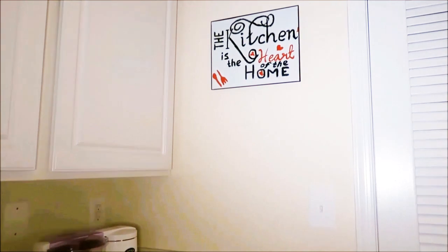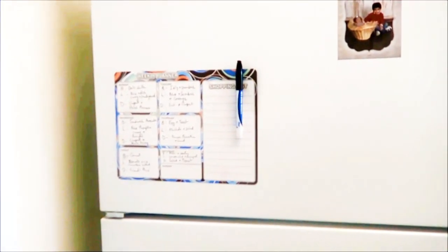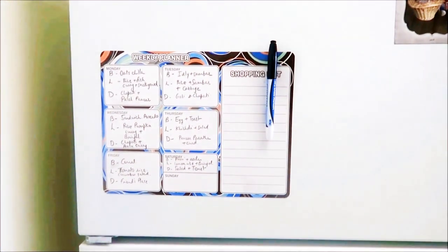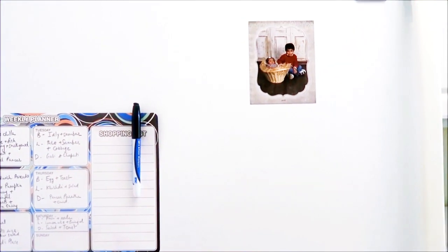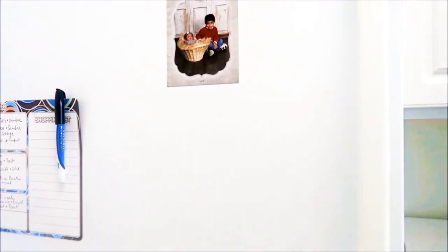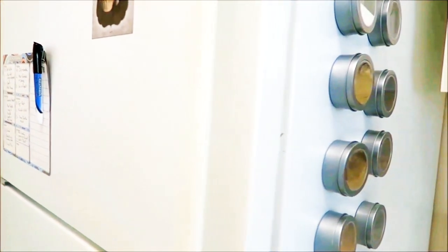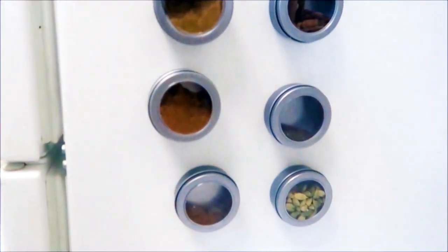Let's enter into the kitchen. Starting from this side, here we have the refrigerator on which I have a board where I jot down my meals for the week. Moving to this side of the refrigerator, I have these small magnetic tins in which I've filled all the spices I frequently use.